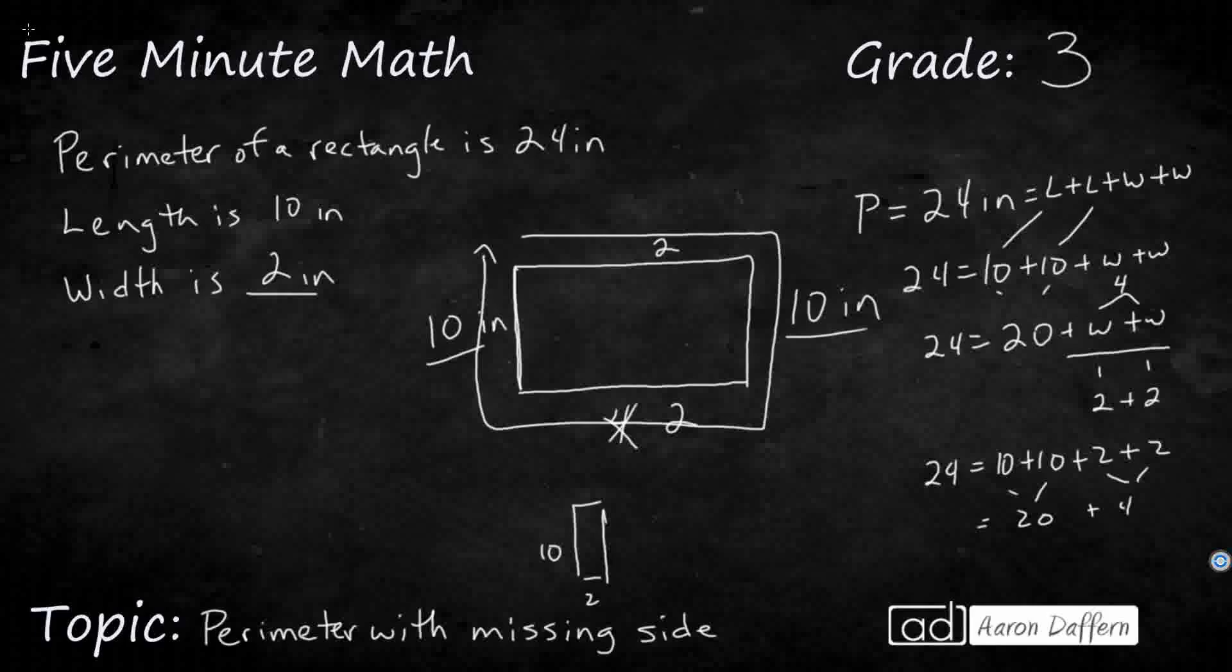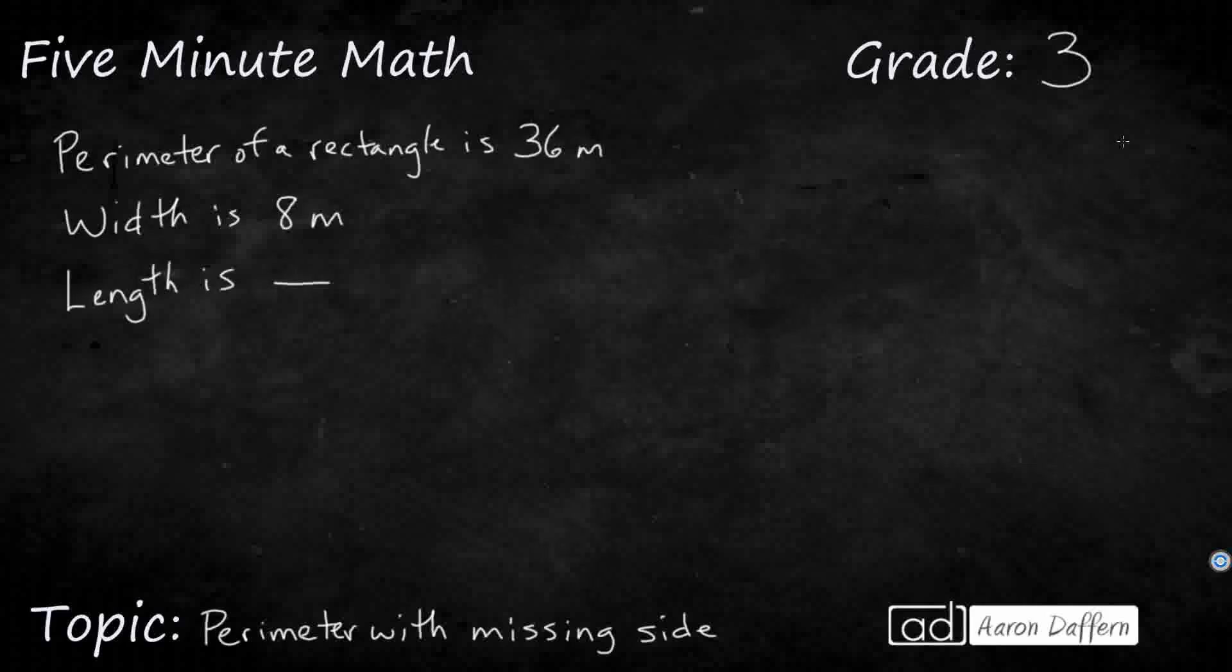Let's look at another example. So we have another problem. We're given another perimeter. Let's draw another rectangle here. This may or may not be an accurate representation, but that's fine. And we're given the width is 8. So let's just call this 8 right here.